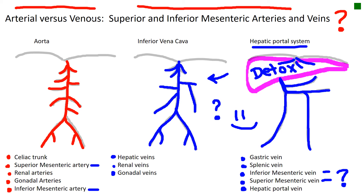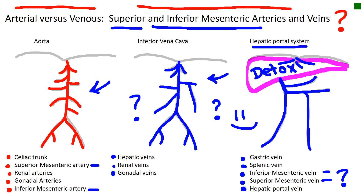So we have answered the question. We know that there is a superior and an inferior mesenteric artery coming off of the aorta. The question was where is the superior and inferior mesenteric vein going back to the inferior vena cava. It's not there — because it's within the hepatic portal system. That is the answer to the question. These are the awesome questions that are wonderful test questions. We need to master this, students.